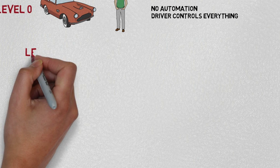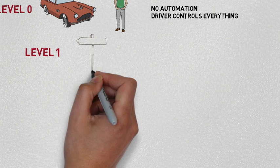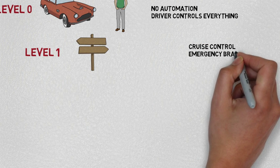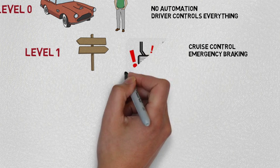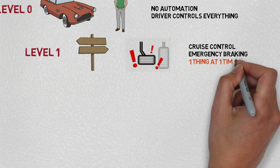At level 1, you have assistance in one direction, latitude or longitude. That is, you have cruise control and perhaps emergency braking. The car can do one thing at one time. Many cars in 2017 are already at this level.